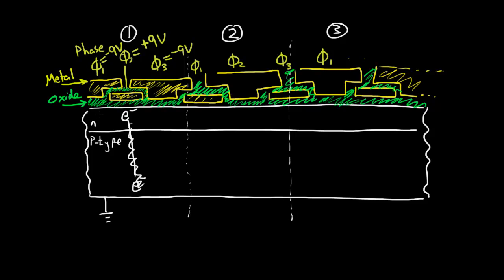Why aren't you going to sit under phase one or phase three? Because the potential right above those electrodes is minus nine volts, so you don't want to sit there. You'd rather be near the plus nine volt potential. So that's where you go, and you're captured there. You cannot pass through the oxide to that metal electrode, and that's good because we want to read you out later.